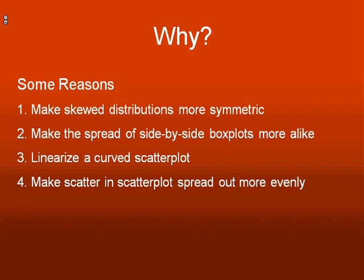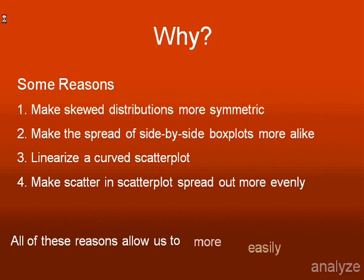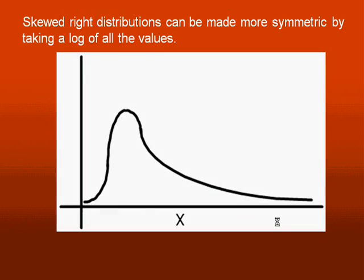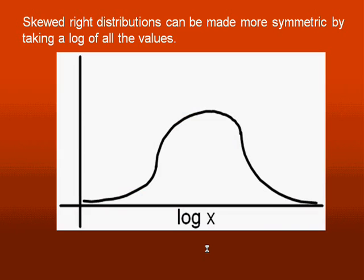Here's an example: we do a histogram, we see the data is very skewed to the right. We can make it more symmetric by taking a logarithm of all the values. Let's magically take a logarithm of them and look, it made it more symmetric. Now we can find a z score and use our standard deviation and find percentages.